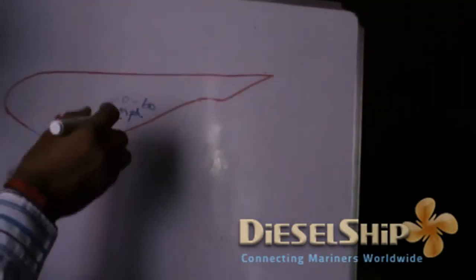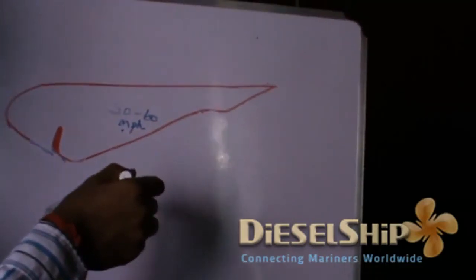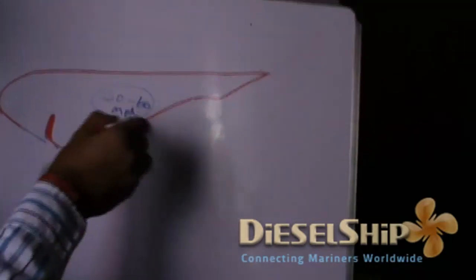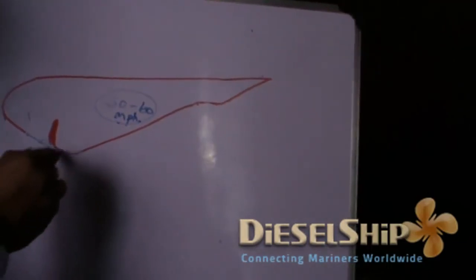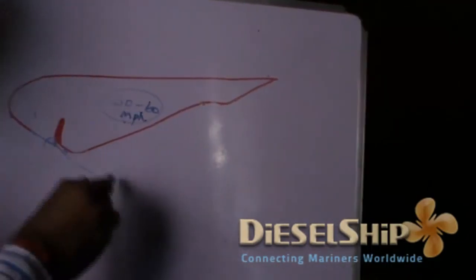Unbelievable, but it is true. The air travels at 50 to 60 miles per hour within this tube and comes out like this. This creates a nozzle effect where the velocity is much more increased.